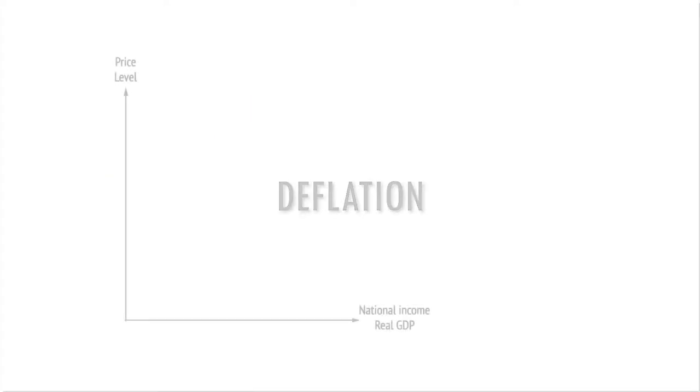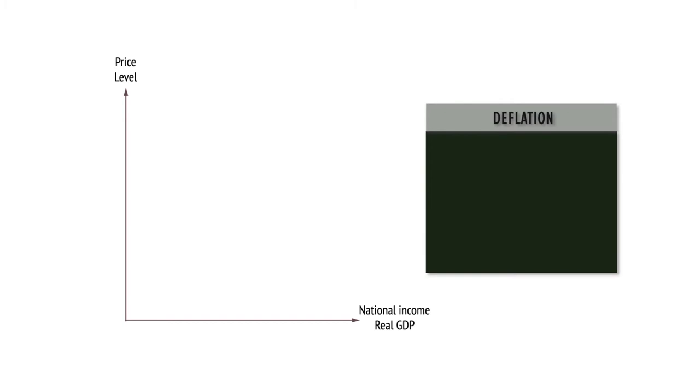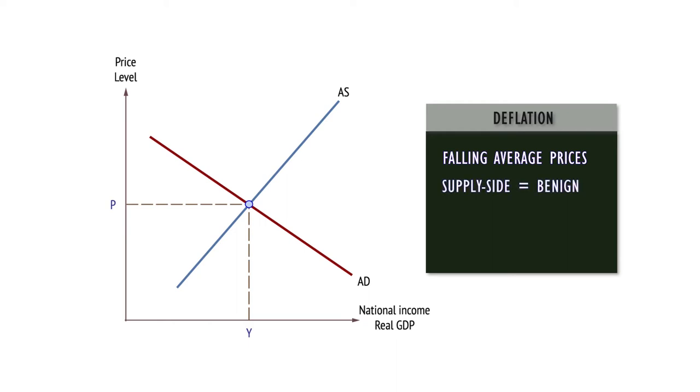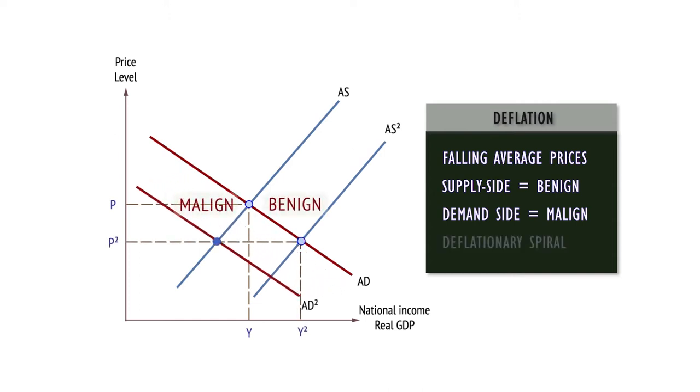Falling prices, called deflation, can originate from both the demand and the supply side. Deflation can be benign, caused by improvements in supply which lower costs, or malign, caused by falling aggregate demand. The two types can occur together in a deflationary spiral.